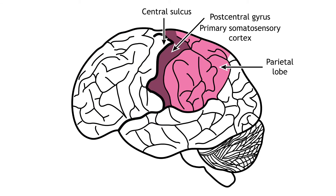The central sulcus lies caudal to the frontal lobe and divides the frontal lobes from the parietal lobes. The parietal lobes are important for processing sensory information. The primary somatosensory cortex is located in the postcentral gyrus of the parietal lobe, and is responsible for the perception of touch and pain. The parietal lobes also perform higher-level visual processing.